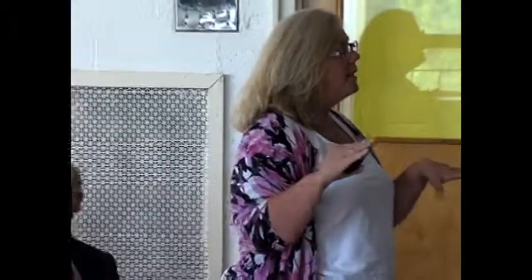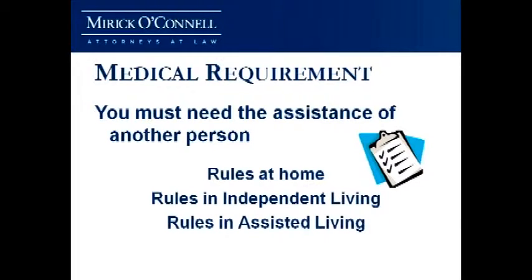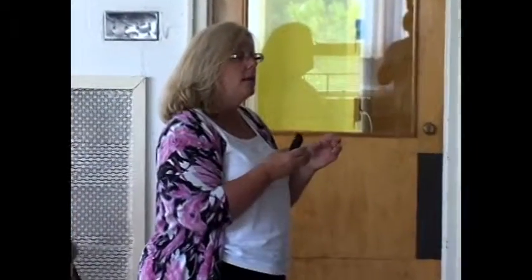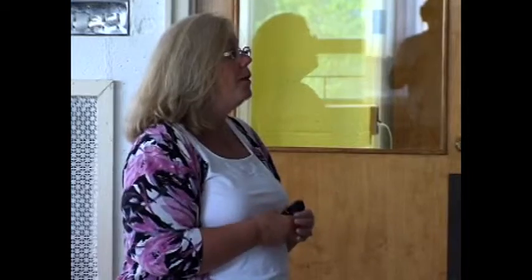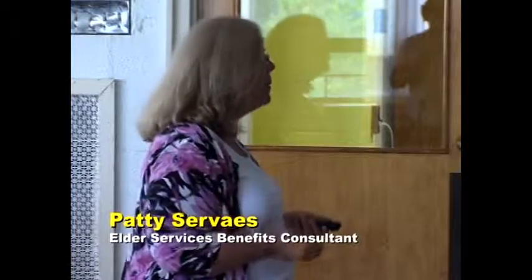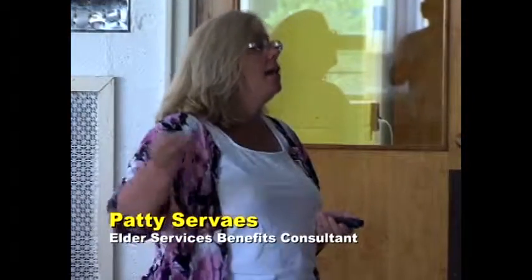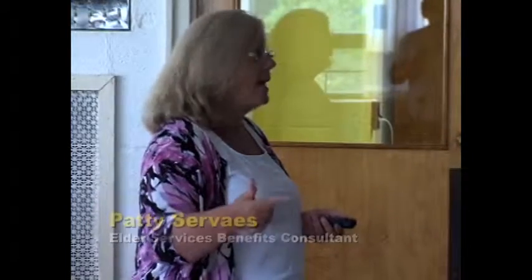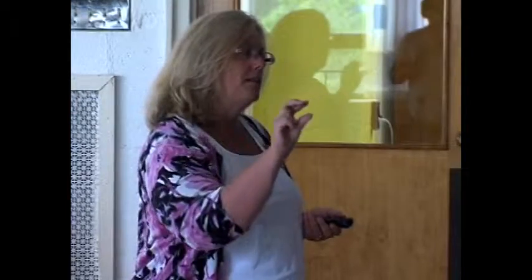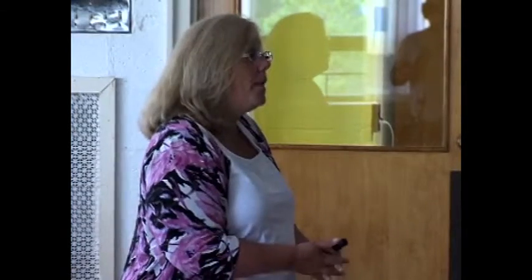The reason there's a distinction between home and assisted living rules is because in order to treat your assisted living or independent living fee as a medical expense, you have to be able to prove that you are receiving assistance with at least two activities of daily living. When you're at home receiving home care, it's a little more lax — they say you're having somebody come in and you're getting an expense for that, and they'll never let you deduct your mortgage, taxes, or food bill. With assisted living and independent living, we need those two activities of daily living if we want the VA to consider that cost.